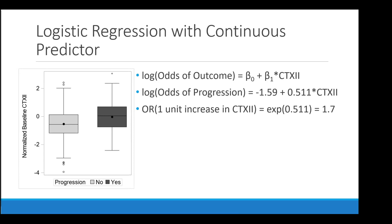We can start thinking about whether this linear assumption is really what we want to model. On one hand it's nice and straightforward — you get one odds ratio of 1.7 for CTX-2. But on the other hand, if there's not actually a linear relationship between your predictor and outcome, then maybe this isn't all that useful.